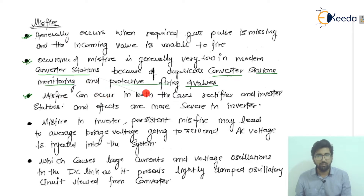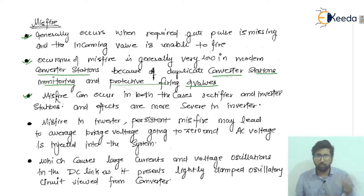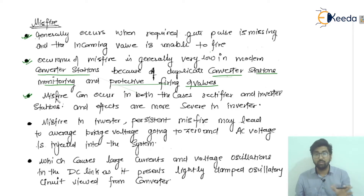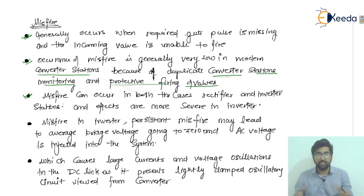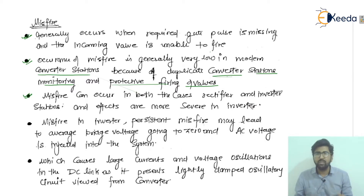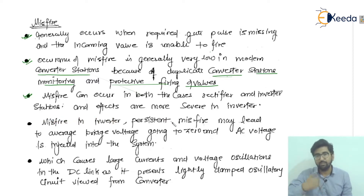Misfire can occur in both the rectifier and inverter stations. You have the rectifier and the inverter, and there may be chances of misfire in both converters. However, the effects are more severe in the inverter. So while misfire can occur at both converter stations, it is more severe at the inverter.